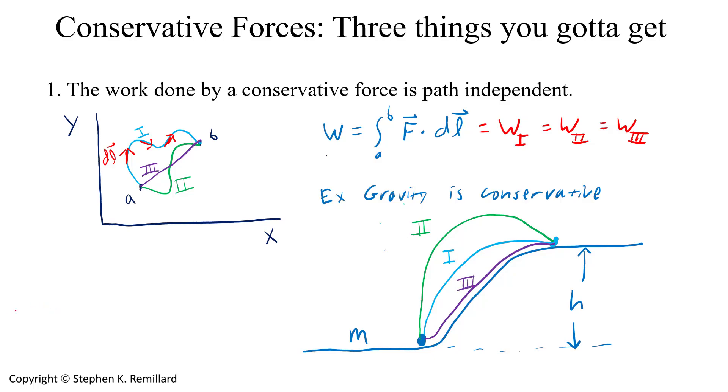In all three cases, the work done by gravity is minus mg, the force of gravity in the down direction, h, the displacement in the up direction.